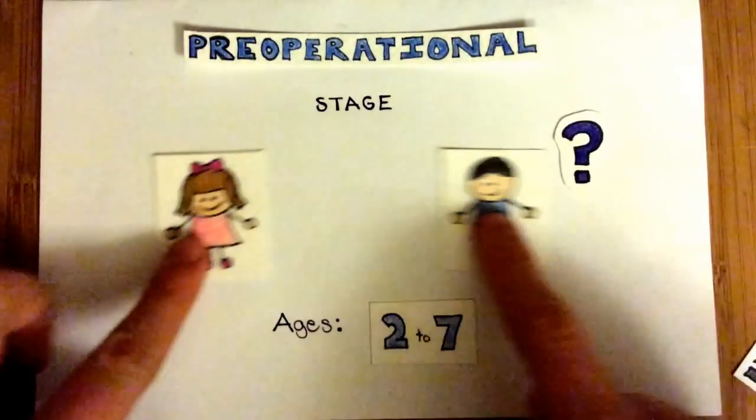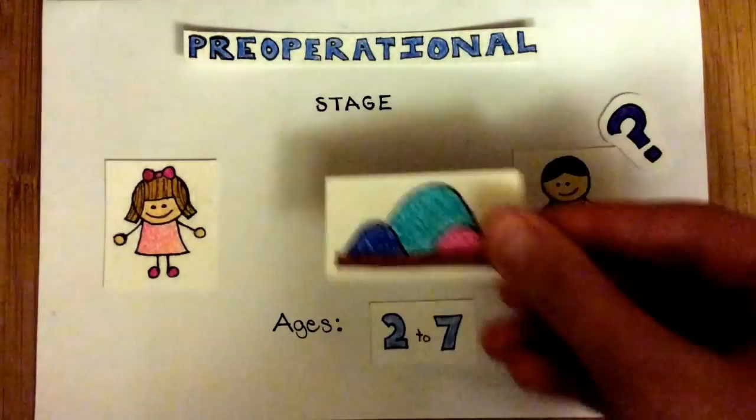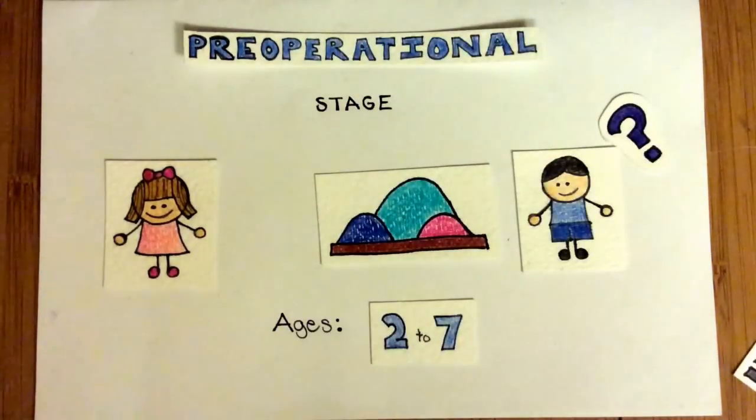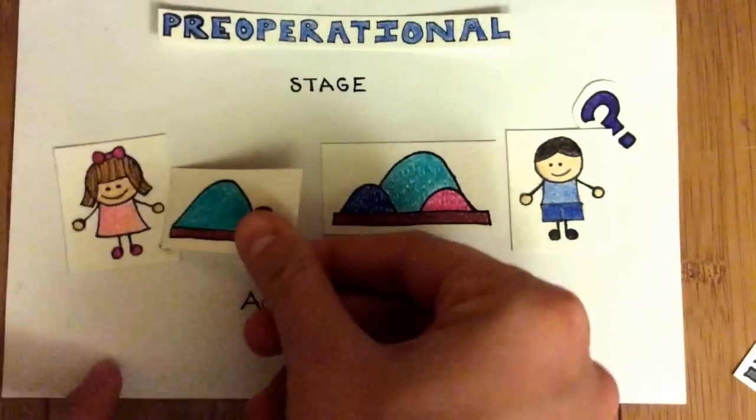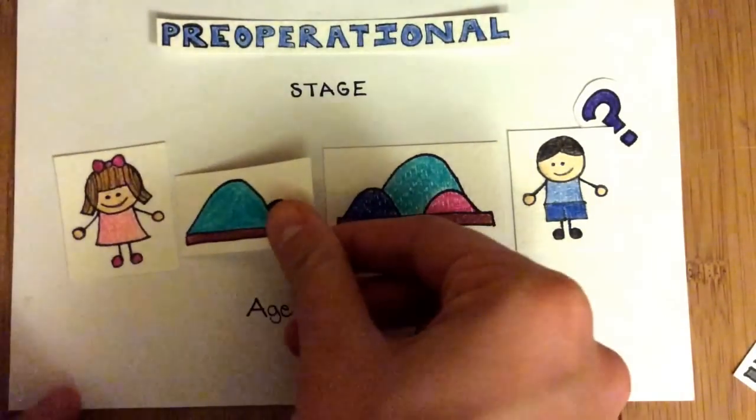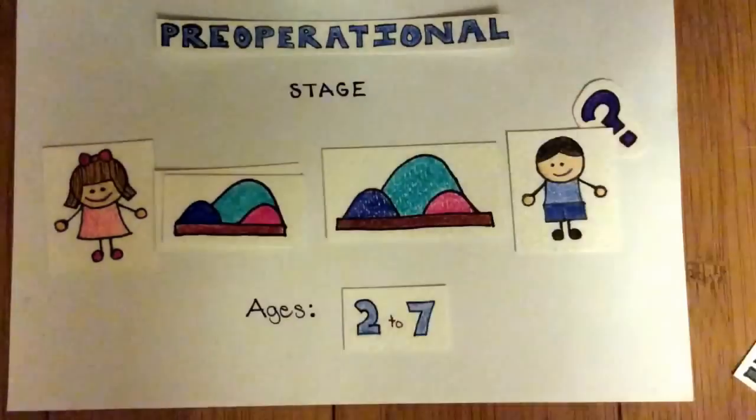One such limitation is egocentrism, which was exemplified by Piaget's Three Mountain Task. When asked to identify what the mountain setup would look like from the perspective of someone on the opposite side of the table, children younger than age 6 incorrectly choose the picture that shows their own point of view.